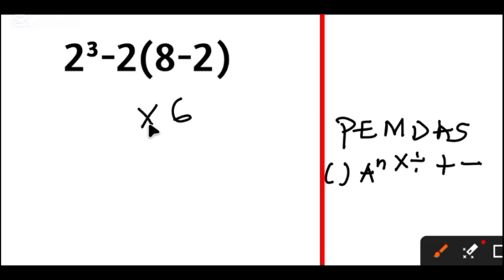Multiplication is here, and then we pull down this 2 here and the subtraction sign. We have 2 raised to power 3. Next is the exponent.